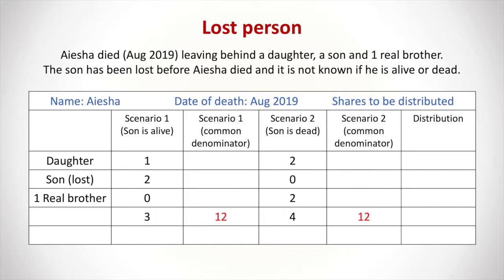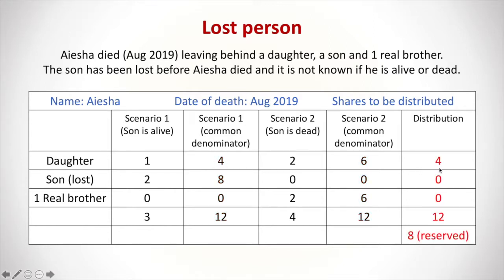Transforming using 12 as the common denominator: in scenario one, the daughter gets four and the son gets eight, totaling 12. In scenario two, the daughter gets six and the real brother gets six, totaling 12. The son can potentially get eight shares — the maximum amount — so we reserve eight. We distribute four now (to the daughter), reserving the son's share and giving nothing to the brother until the case is resolved. If the son is found dead before Aisha's death, the eight shares are redistributed: two more to the daughter and six to the real brother. If the son is found alive, all eight go to the son.